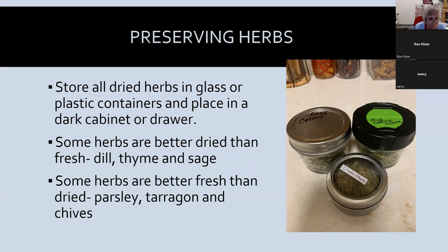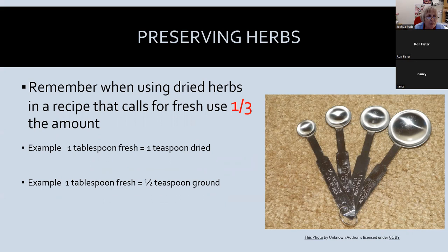One quick tip: if a recipe calls for a tablespoon of fresh herb but you only have dried, the ratio is one to three — one tablespoon of fresh equals one teaspoon of dried. And since ground herbs are more potent than dried, one tablespoon of fresh equals about one-half teaspoon of ground.